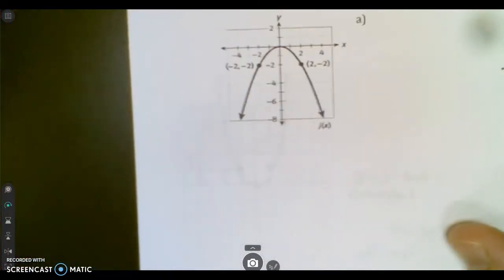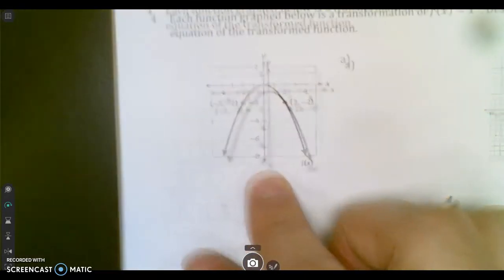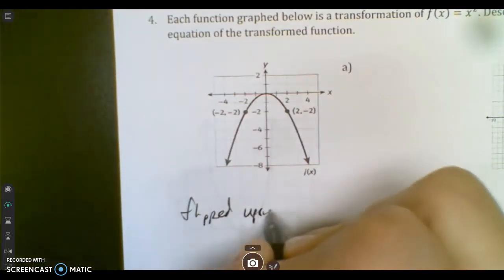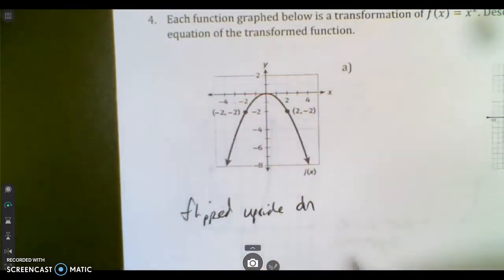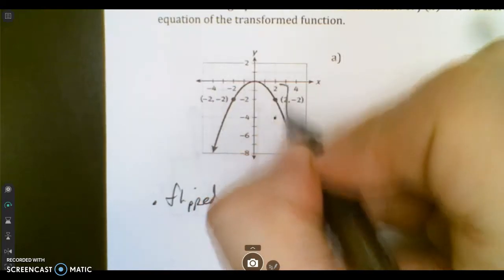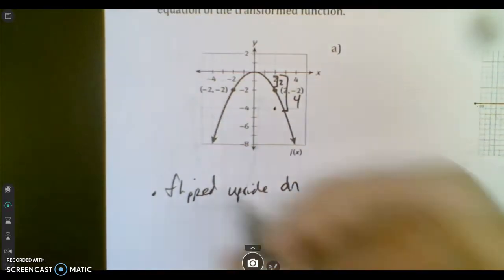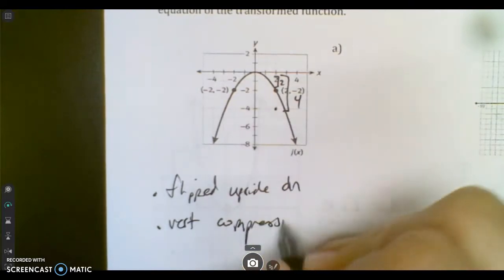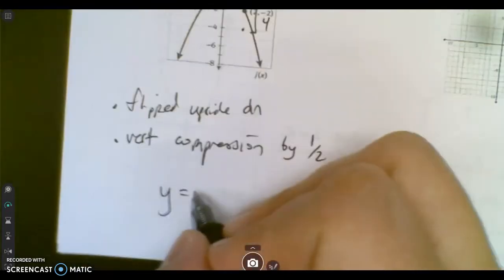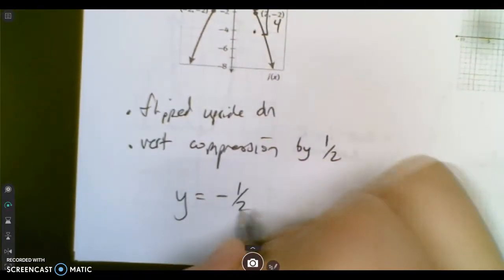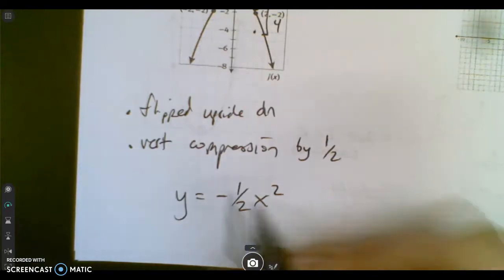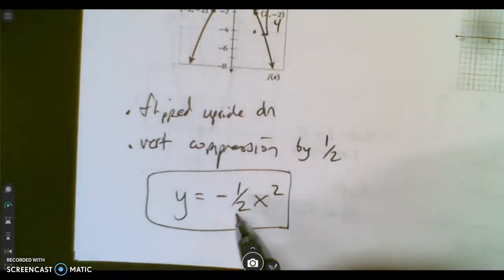Then we go to the next one. And here we have a picture. And I want to describe what's happened to it and then write the equation. So right now it looks like it's flipped upside down. It's not shifted at all. But it is compressed because normally I would expect right 2, down 4. I would expect this to be a height of 4. But really it's a height of 2. So to me that's a vertical compression by 1 half.